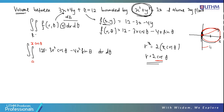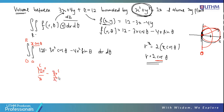Integrate with respect to R from 0 to 2cosθ: ∫₀^{2cosθ} (12R − 3R² cosθ − 4R² sinθ) dR = [6R² − R³ cosθ − (4/3)R³ sinθ]₀^{2cosθ}. Substitute R = 2cosθ and simplify each term, then split into separate integrals over θ from 0 to π.